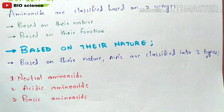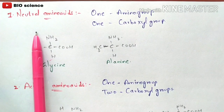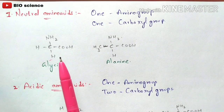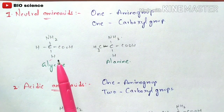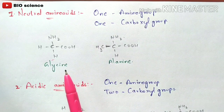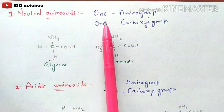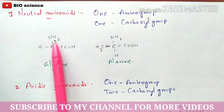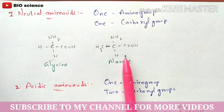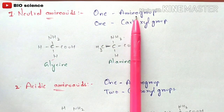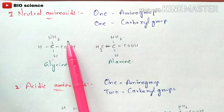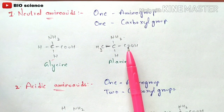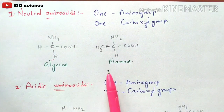Let us learn all three types. Neutral amino acids contain one amino group and one carboxyl group — the same basic structure defined earlier. The best examples of neutral amino acids are glycine and alanine. Looking at their structures, glycine contains only one amino group and one carboxyl group, and alanine similarly contains only one amino group and one carboxyl group. These are classified as neutral amino acids.